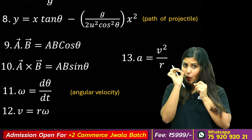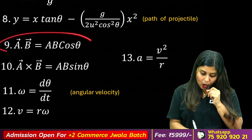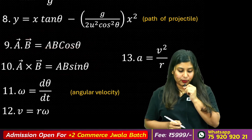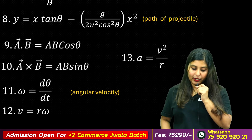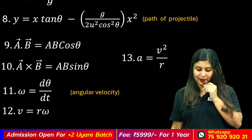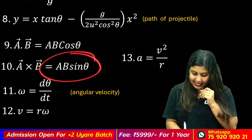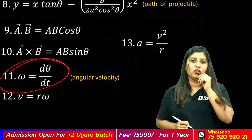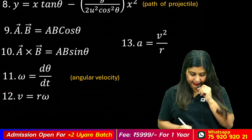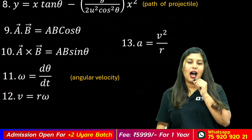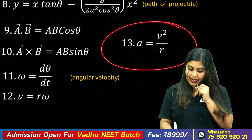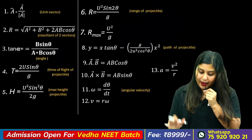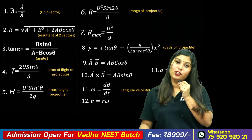The important topic is dot product and cross product. The dot product is ab cos theta; the cross product is ab sin theta. For uniform circular motion, omega equals d-theta by dt, with the relationship v equals r omega, and centripetal acceleration equals v² by r.